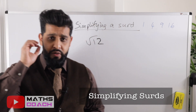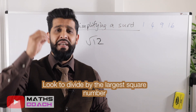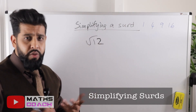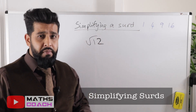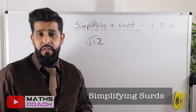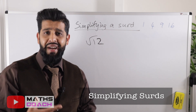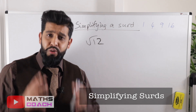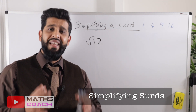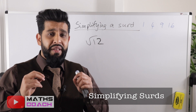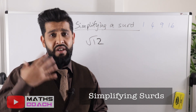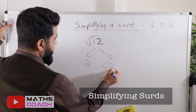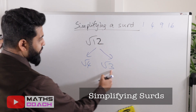The aim is to divide 12 by the square numbers. The best way to do this is to divide by the largest square number. We can divide 12 by 2 to get 6, but 2 is not a square number. The square number we want to divide 12 by is 4, so we get √4 × √3.